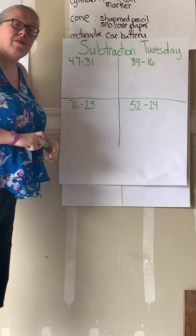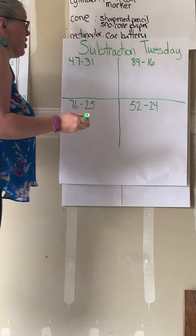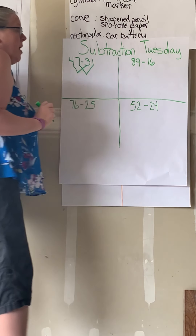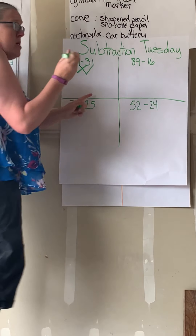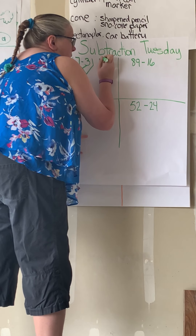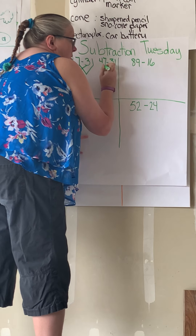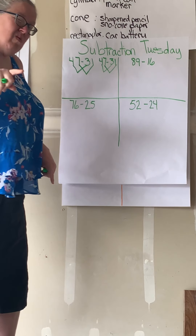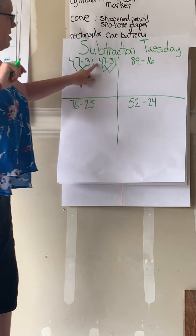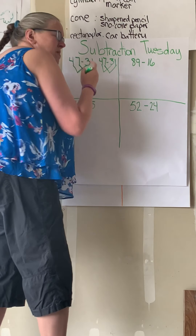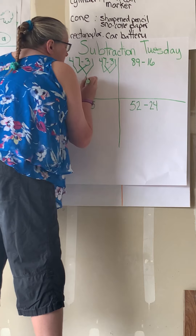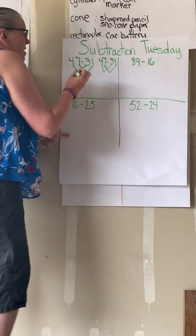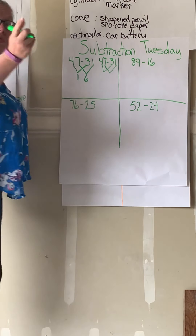The first one is 47 minus 31. Let's see if you remember this strategy. We're connecting our ones, then connect our tens. Let's do the ones place first. Seven minus one is six. Four minus three — that's one. So that's 16.